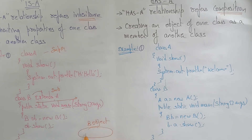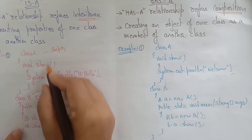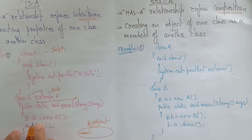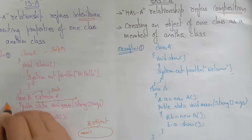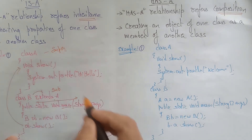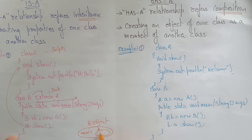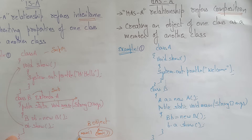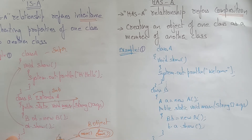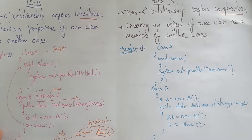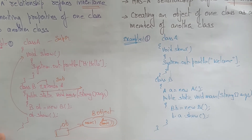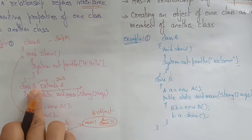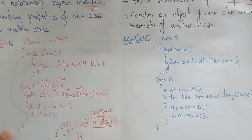Inside the B object, with the main method called and object B created, we call ob.show(). Since class B extends class A, the A object is also created inside B. This can be referred to using object reference ob, and ob.show() is called.